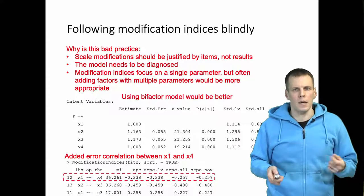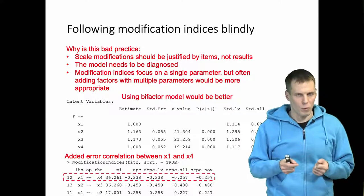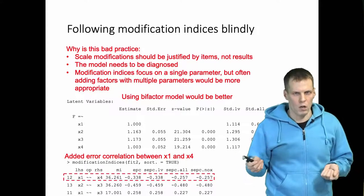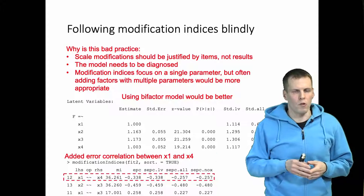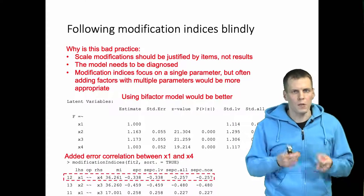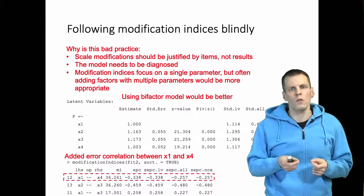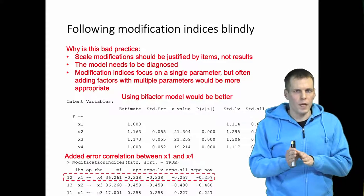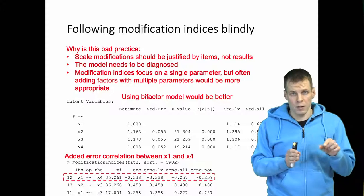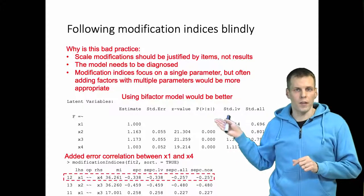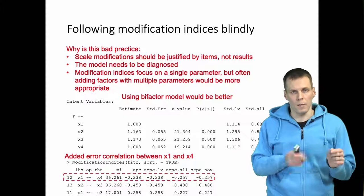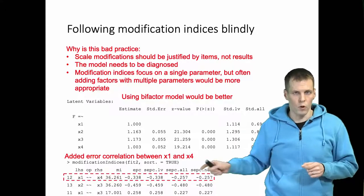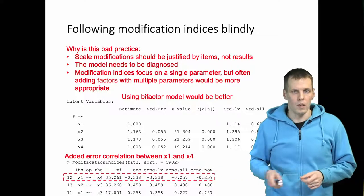Particularly in this case, using a bifactor model would be better. It is almost always generally better to use a bifactor model than freeing a correlation, because bifactor forces you to interpret the model. And also, if the right choice to do would be to actually add a factor that loads on multiple items, then the modification indices would indicate that the bifactor actually needs more indicators than just two, which you would get when you do a correlated error.